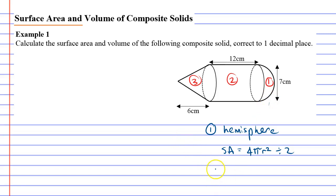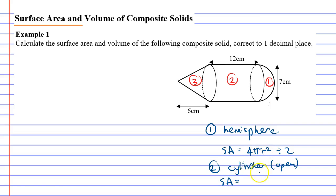The second shape is a cylinder, and it's an open cylinder, meaning there are no circles at each end. So the surface area for that is 2πrh — we've ignored the plus 2πr² part of the formula because there are no circles to add.